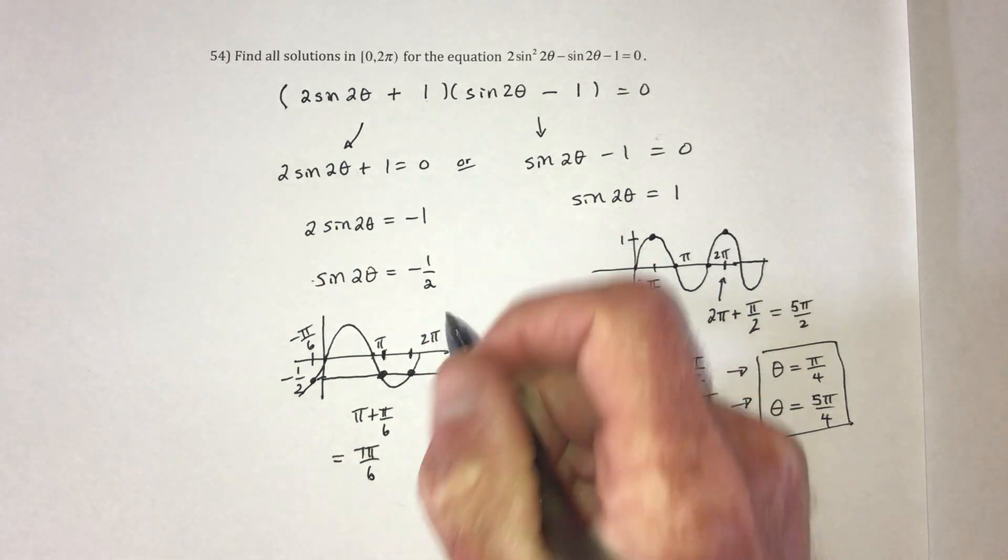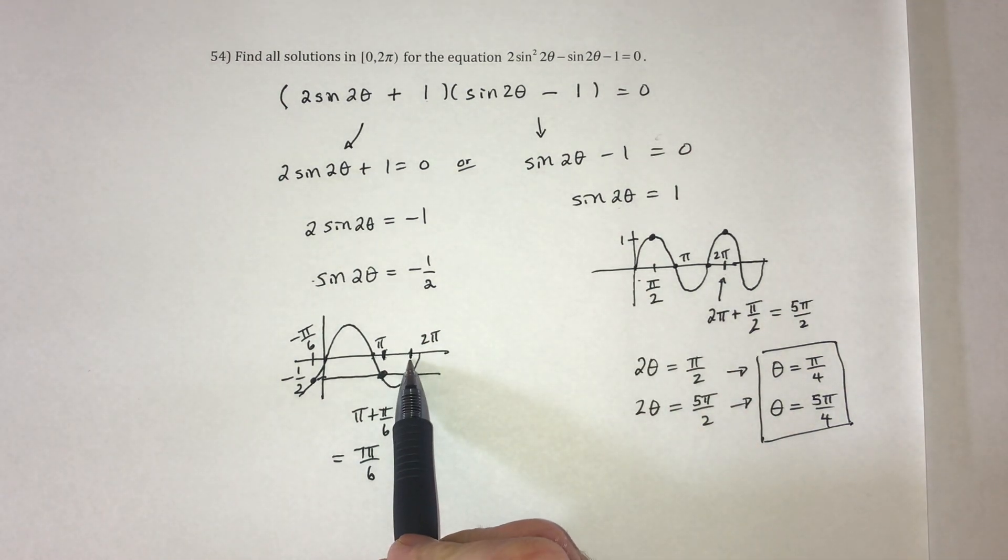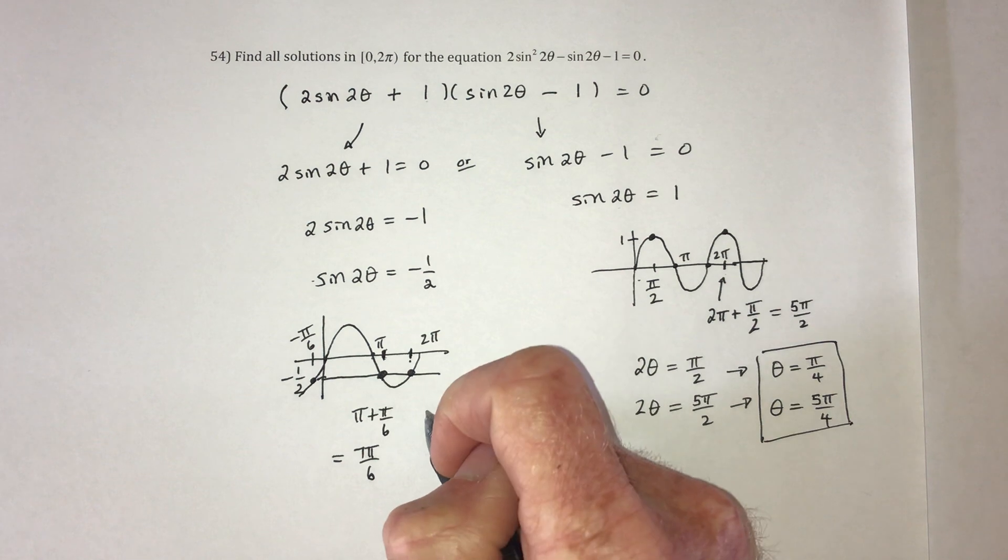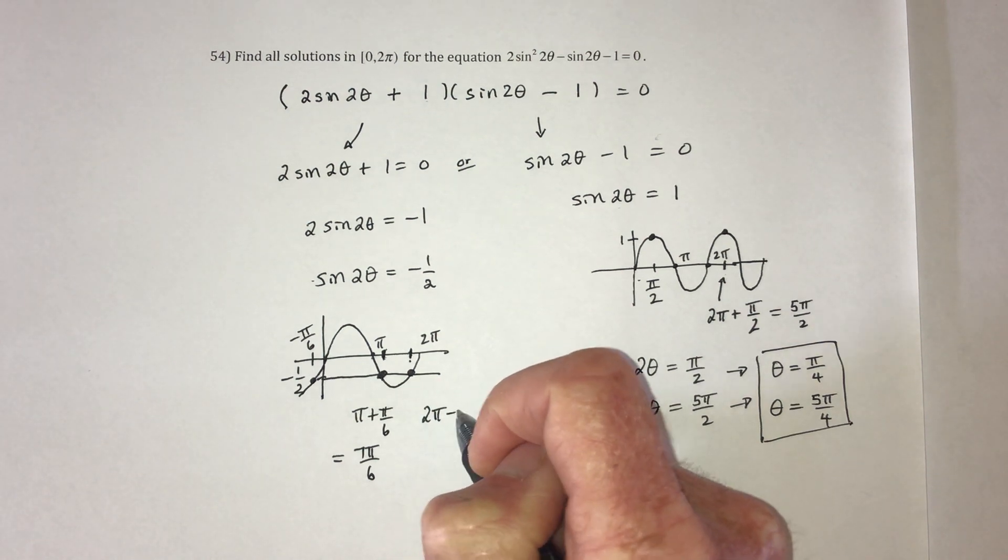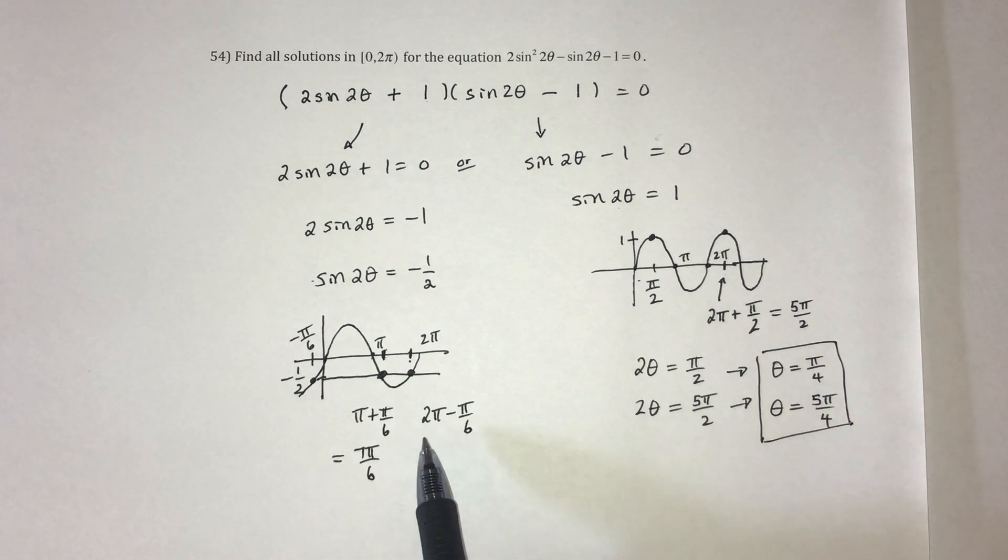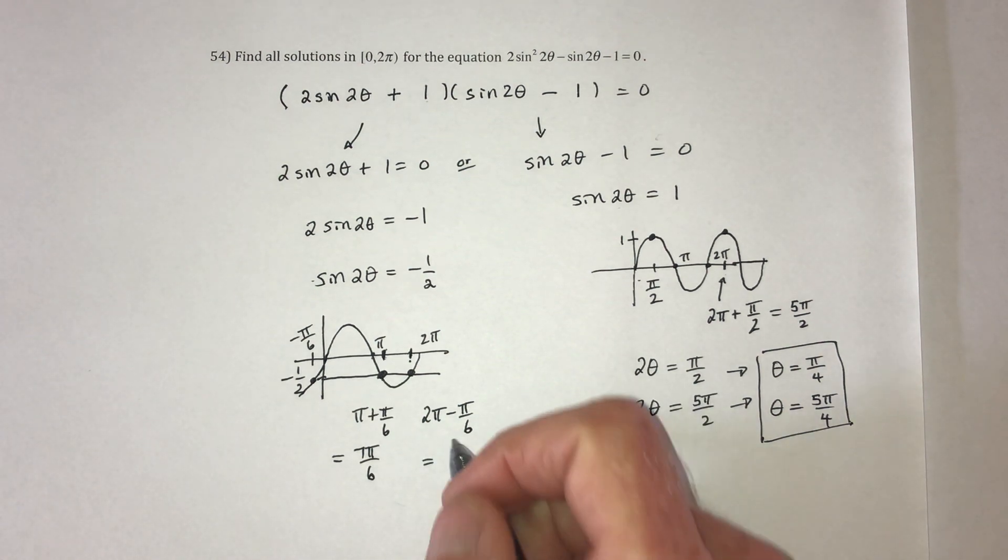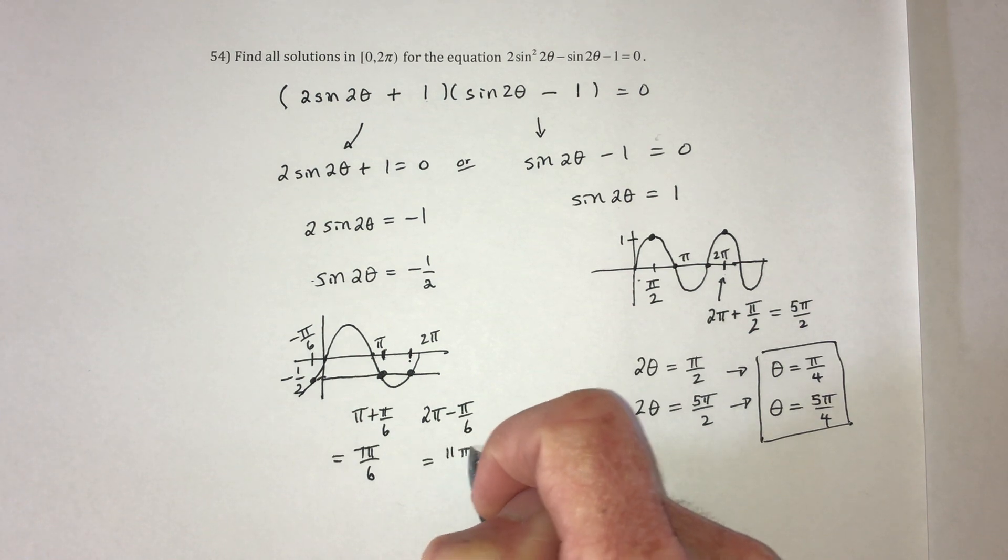And for this solution, so this one is to the left of 2 pi, so that would be 2 pi minus pi over 6. And then this would be 12 pi over 6 minus 1 is 11 pi over 6.